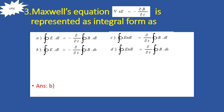Next problem: Maxwell's Equation del cross E equals minus dou B by dou t — represent this in integral form. Del cross E can be written as the line integral of E dot dL, and minus dou B by dou t becomes minus dou by dou t of the surface integral of B dot dS. So option B is the right answer. This is the integral form of the equation based on Faraday's Law.